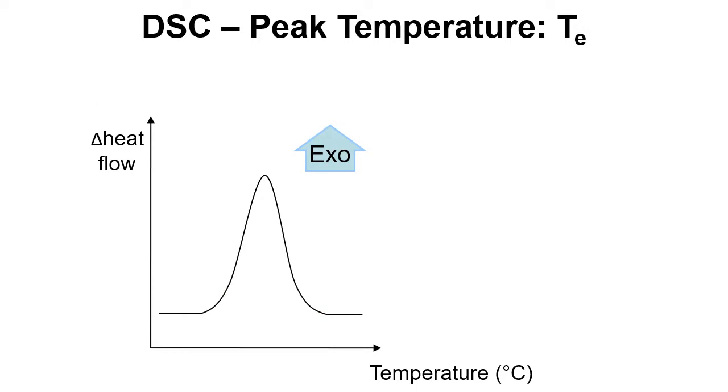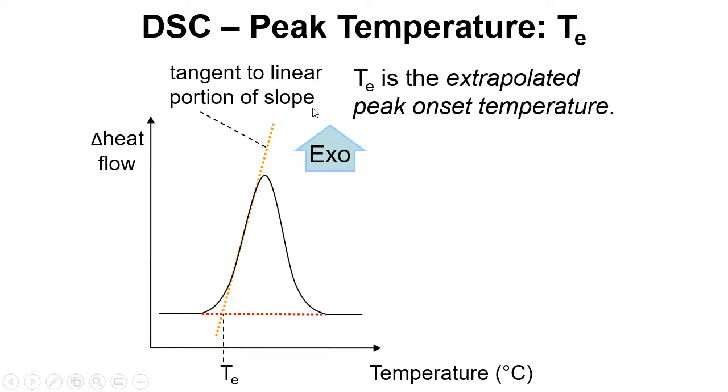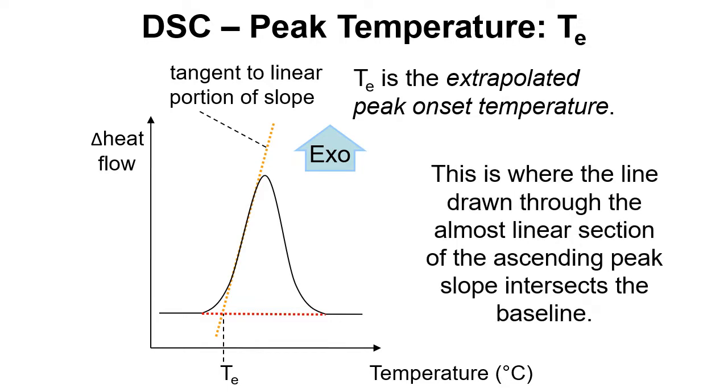A better approach is to use the extrapolated onset temperature. So here we draw a tangent to the steepest part of the curve and we'd look at where that crosses the baseline. So this is the extrapolated peak onset temperature and it's a bit more reliable and rigorous. It's less prone to these problems in terms of deciding where the baseline should be. To summarize, we draw the line through the steepest section of the ascending part of the peak and we look at where that intersects the baseline.